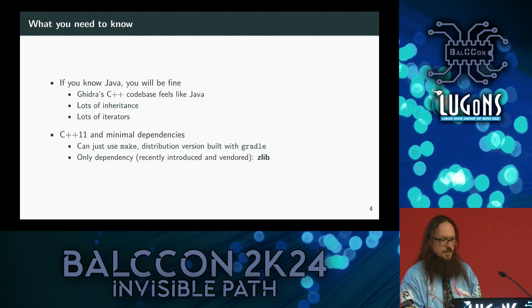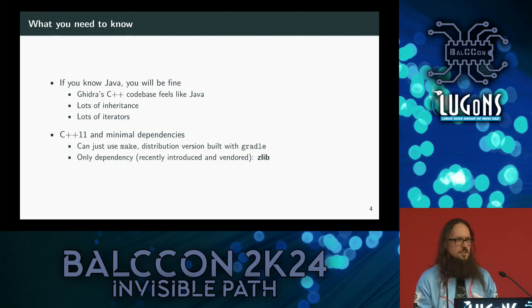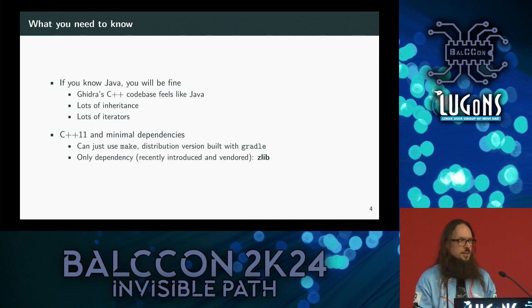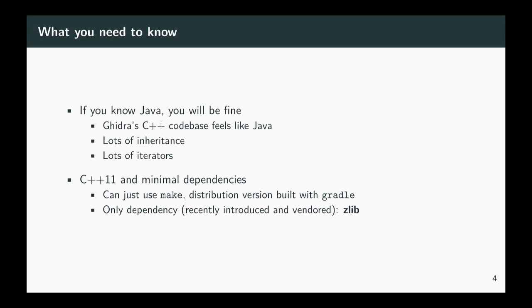It has minimal dependencies. When distributed it's built with Gradle, but for development they just have a makefile, which is comfortable for Linux users — you can just run make for whatever you want to build. Until recently they had no dependencies at all; they added their own XML parser just to avoid dependencies beyond basic Linux installations. Now they've added Zlib and vendored it, so it's a self-contained package. In the examples I uploaded I used a Meson project, which should also work on Windows with Visual Studio theoretically.